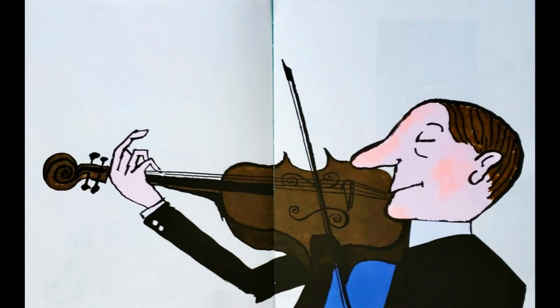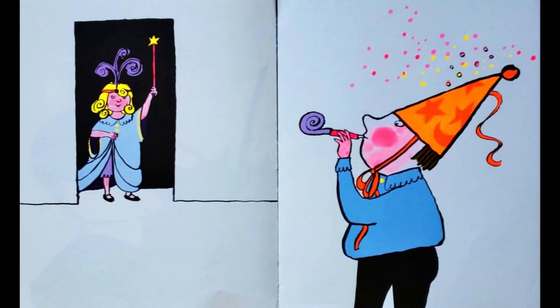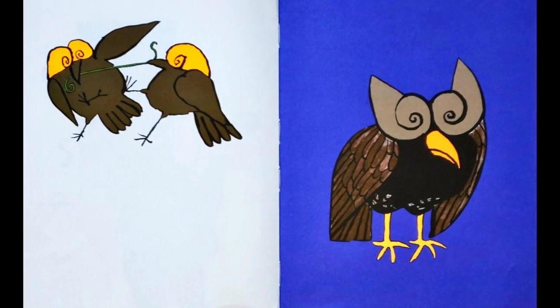Where are the curly shapes on this page? They are on the violin. The bird's eyes and the worm.